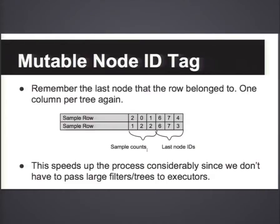Another trick we use in our implementation: when you train decision trees, the trees filter training samples to different nodes. As you train from the root down to child nodes, child nodes see fewer and fewer samples. To speed things up, instead of passing the entire decision tree to executors every time, we try to remember which node a particular sample belonged to after one iteration. We append extra columns — mutable columns — using the mutable tricks that Chris talked about in his previous talk. This can speed up the whole process quite drastically.